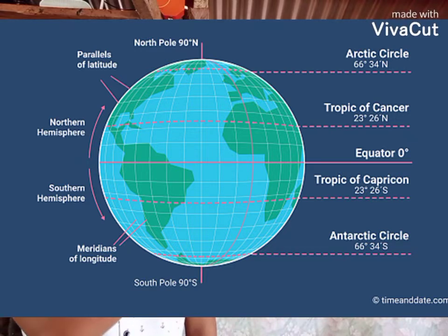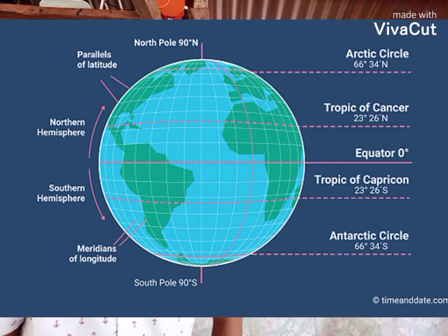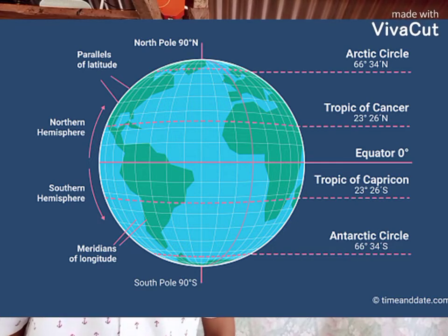The northern hemisphere has the Tropic of Cancer, and the southern hemisphere has the Tropic of Capricorn. To know more about navigation, just follow me in my videos.